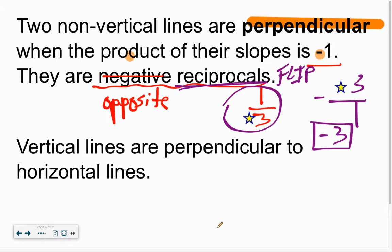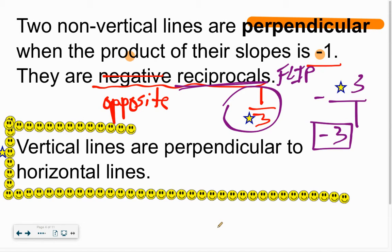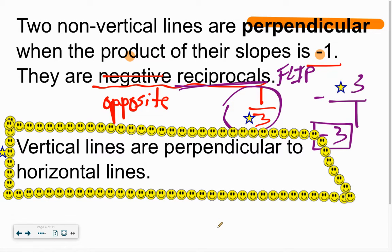That's all opposite reciprocal means. Again, down here you may want to put a star by this, or put a big box by it. This is important, comes back into play, that vertical lines will always be perpendicular to horizontal lines. We can't prove that with slope because vertical lines have undefined slope, but a vertical line and a horizontal line will always be perpendicular. They'll always meet at a 90-degree angle.